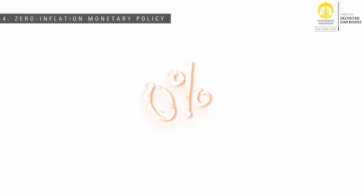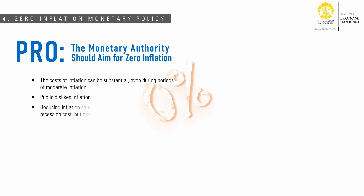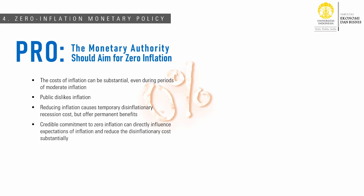The second issue on monetary policy is whether the monetary authority should aim for zero inflation or not. Advocates stress the substantial costs of inflation even during periods of moderate inflation, and they believe the public dislikes inflation. Reducing inflation is thought to cause temporary disinflationary recession costs but offer permanent benefits. If the monetary authority announces a credible commitment to zero inflation, it can directly influence inflation expectations and even reduce disinflationary costs substantially. Moreover, zero inflation is the only target at which the monetary authority can claim to have achieved price stability and fully eliminated the cost of inflation.